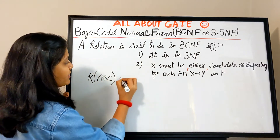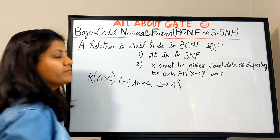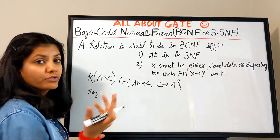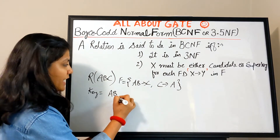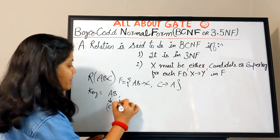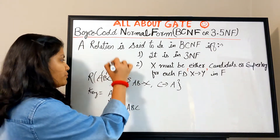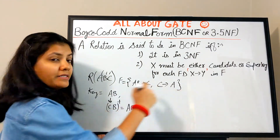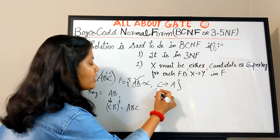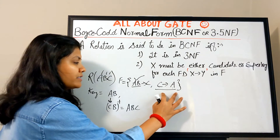Let's take one simple example: relation R(A, B, C) with functional dependencies AB → C, BC → A, and C → A. The key is AB because AB determines ABC. Since A gets replaced by C, BC is also a key because BC's closure also gives ABC. So all three attributes are prime attributes. Now checking the functional dependencies: AB is a complete super key determining a key attribute — never a problem.